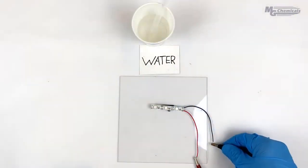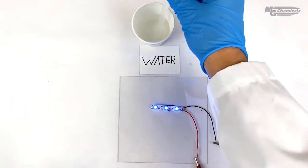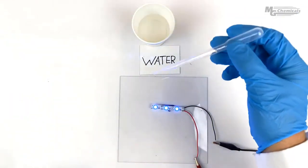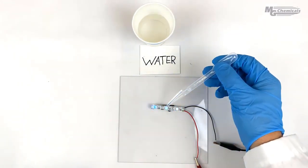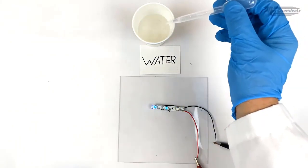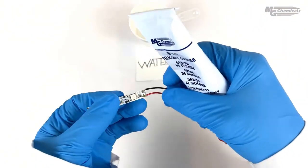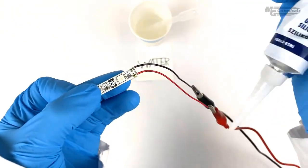The first demonstration shows how the 8462 dielectric grease can help prevent water from shorting a circuit. Without protection, the water drops short the circuit, shunting current away from its intended destination, causing the lights to glow.